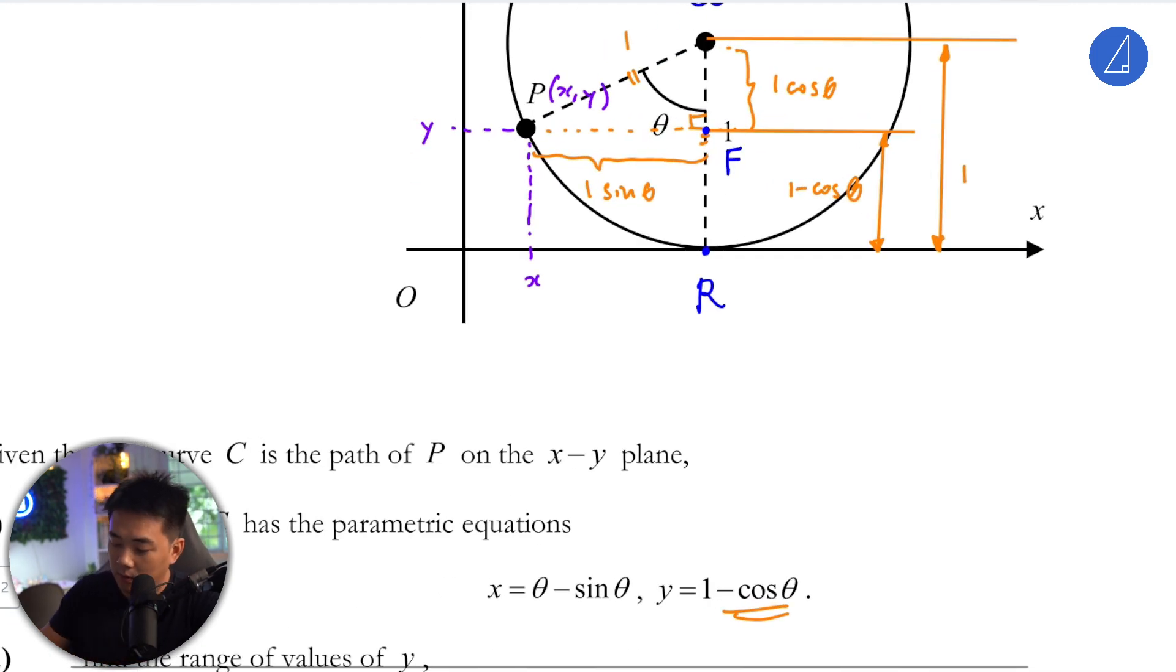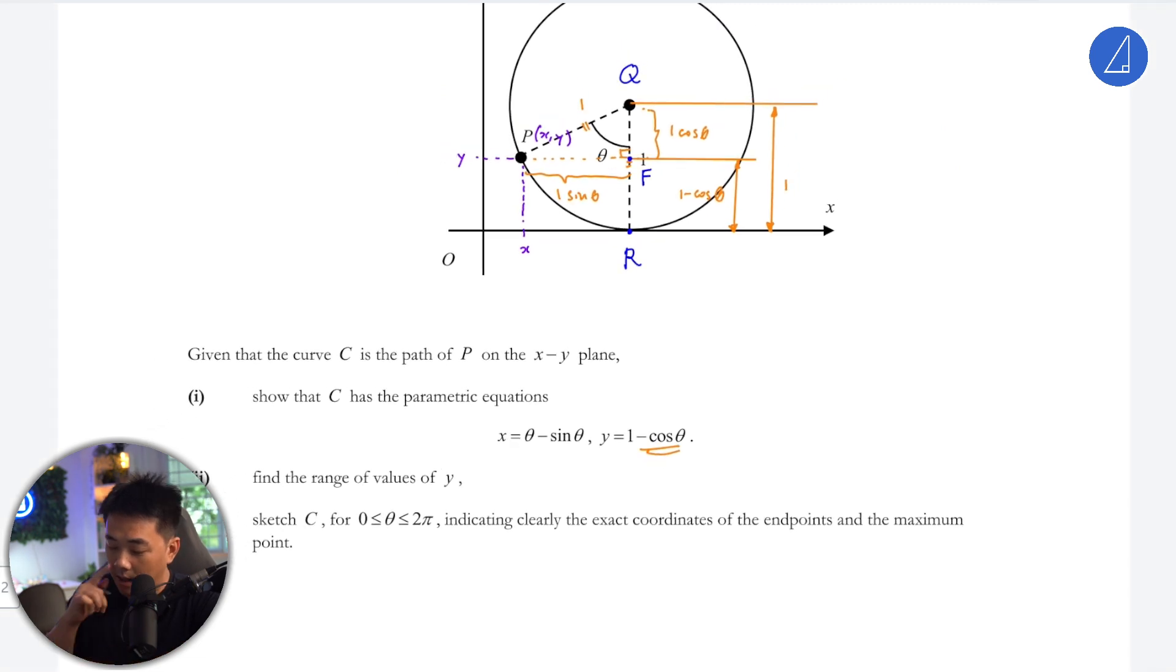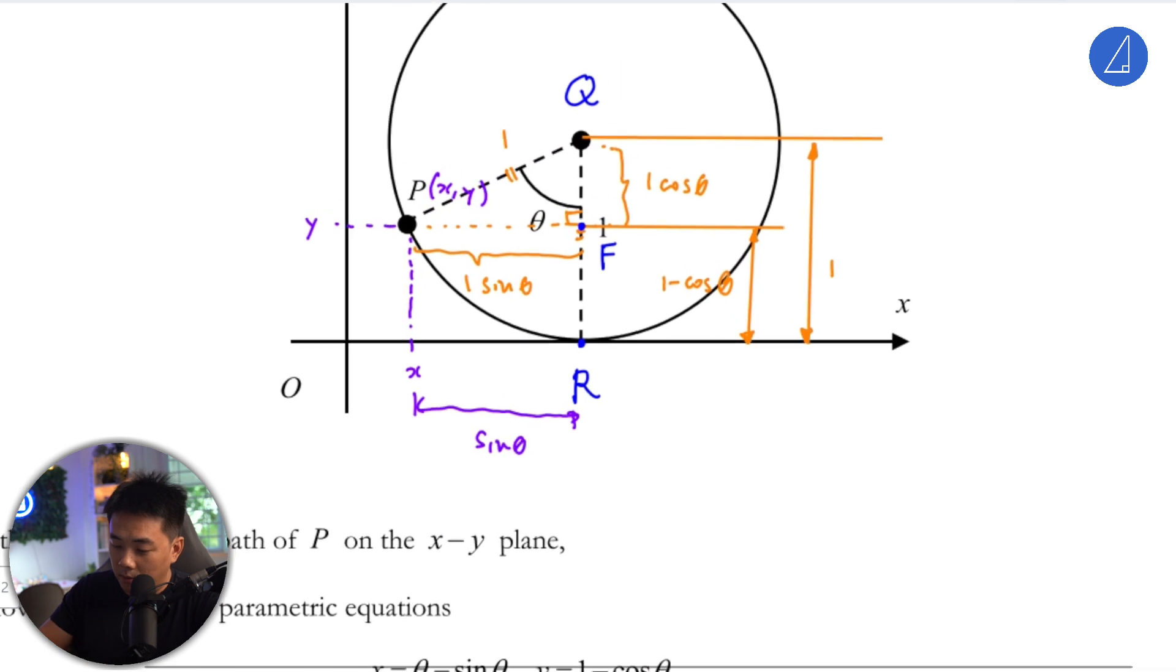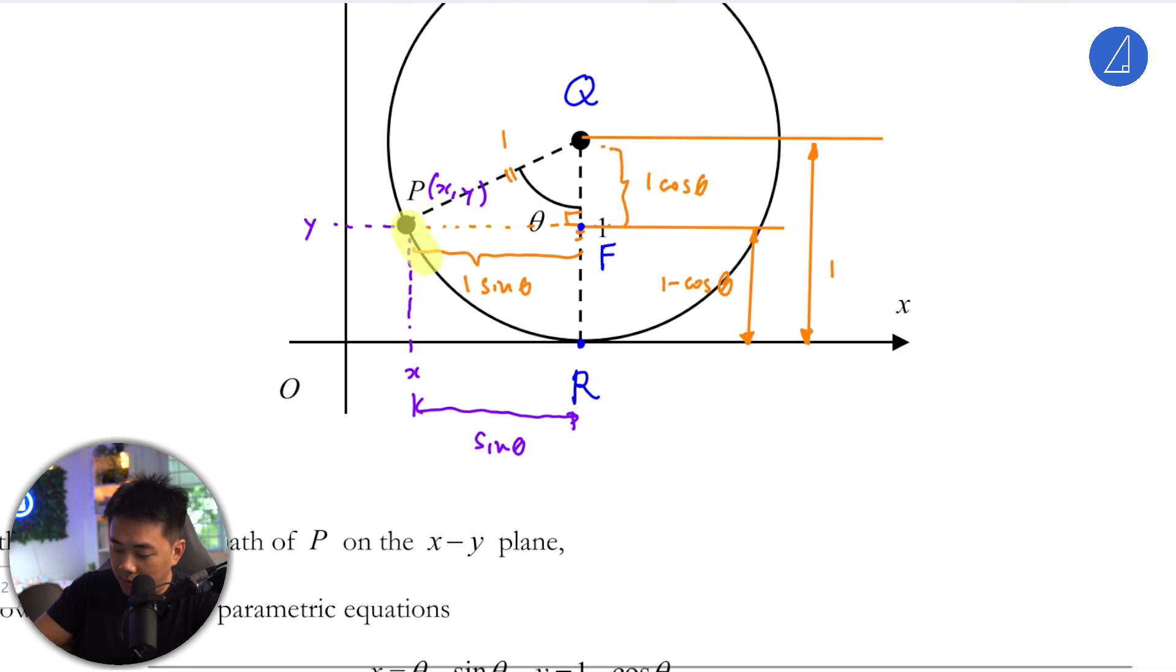x is not so straightforward. I think getting sine y, there's an extra theta here which you need to account for. So sine theta is over here. So you know that you need to minus off something. But take note. As you roll over, this length here will be equal to this length here. The arc length, PR, will be equal to OR. Because that's where you roll. You assume that the wheel doesn't slide. It's always in constant contact with the floor. So PR will be equal to OR.